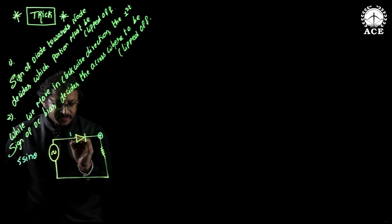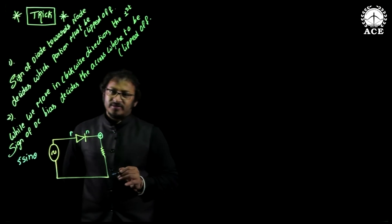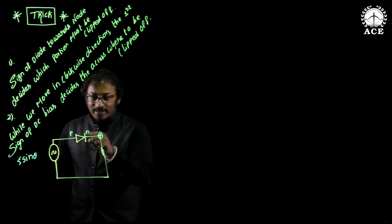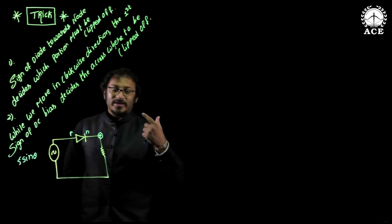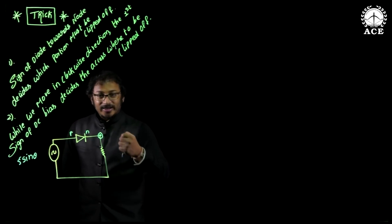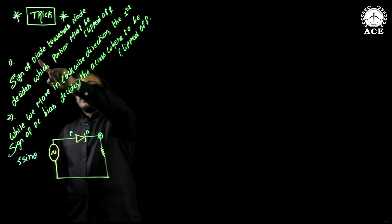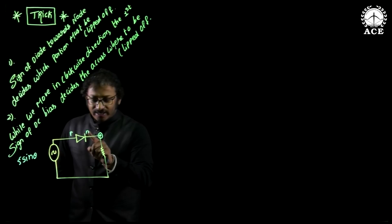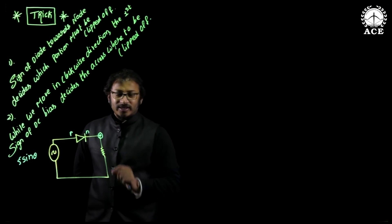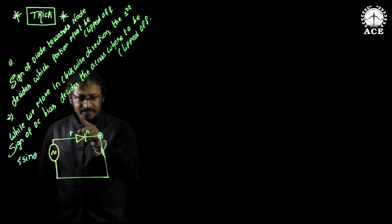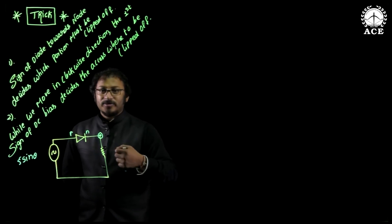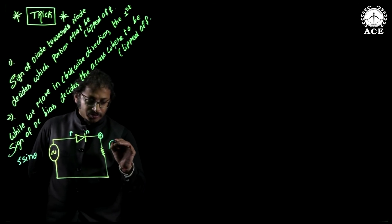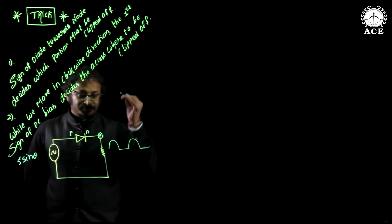Now, this is the P-type semiconductor and this is the N-type semiconductor. At the node which is connected — N-type or P-type? N-type. As N-type is connected, no doubt it should clip the negative half cycle — it should clip the negative portion of the signal. I repeat once again: sign of the diode towards the node decides which portion must be clipped off. If N-type semiconductor is connected to the node, it clips the negative portion. If P-type semiconductor is connected to the node, it clips the positive portion. So here, negative portion must be clipped off, and since DC bias is not there, the output must be a pure positive half signal.